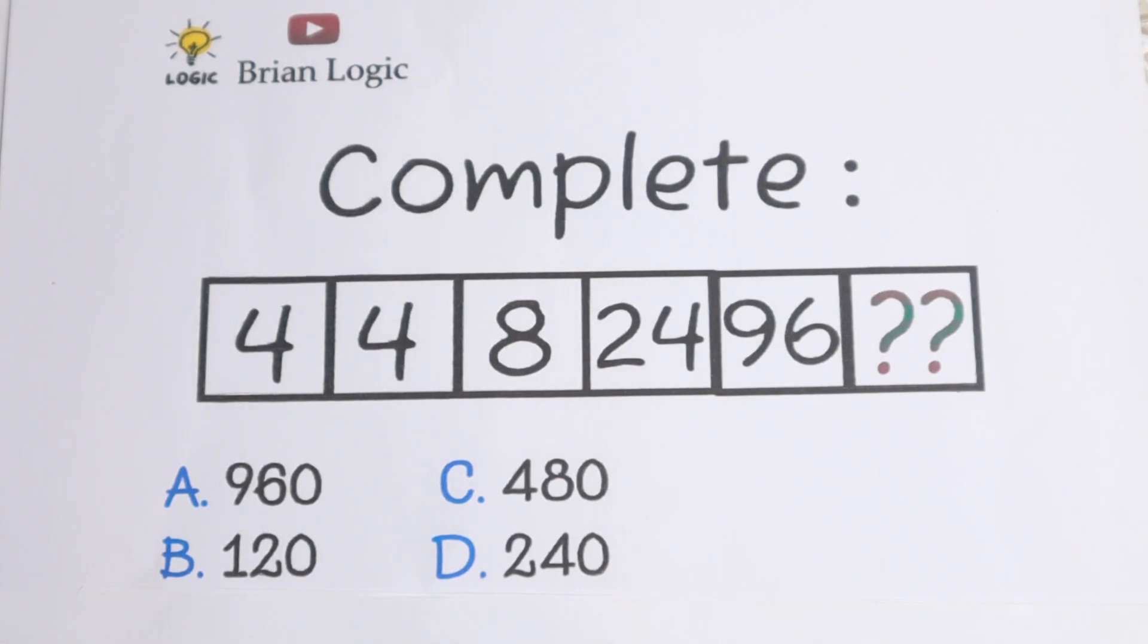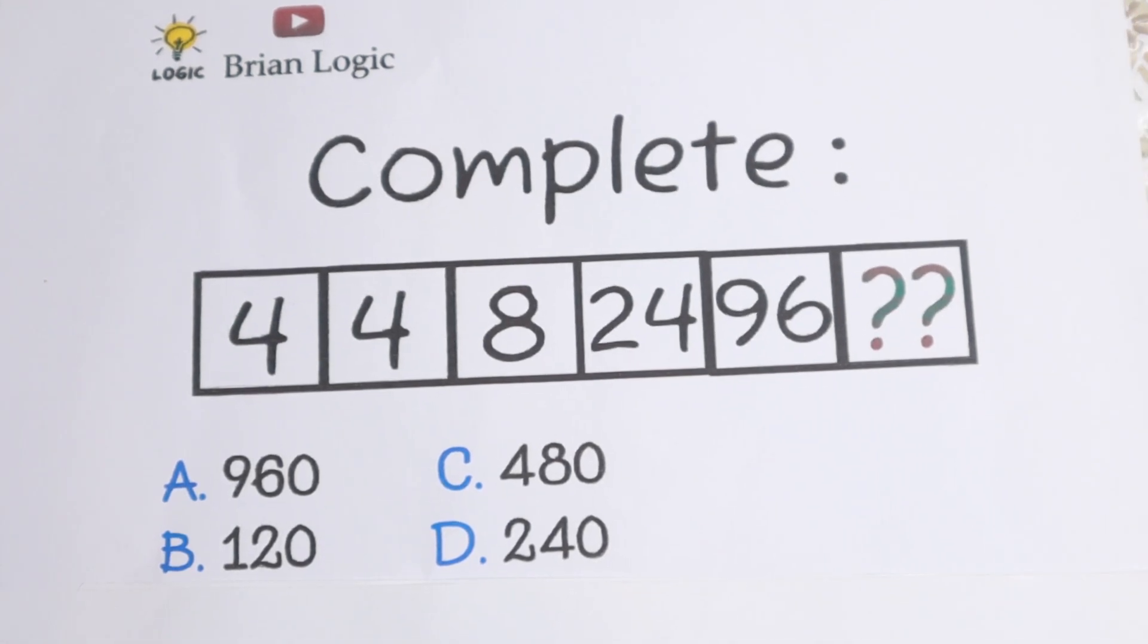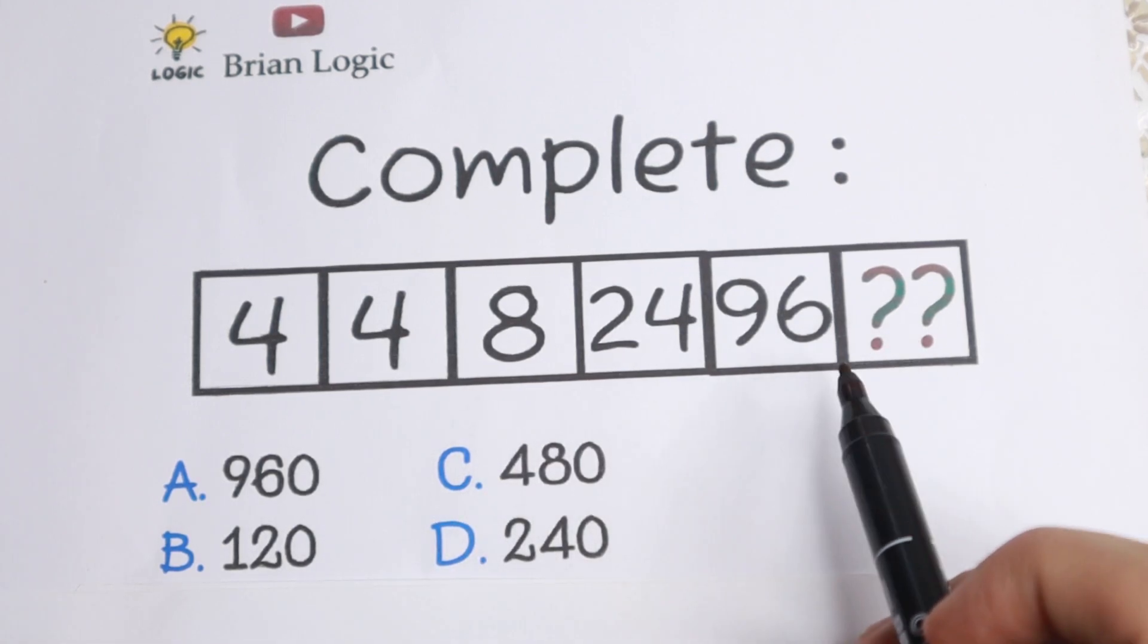Hello everyone, and let's solve this interesting brain test. We have a numeric sequence: 4, 4, 8, 24, and 96, and we need to find the last number of this numeric sequence.